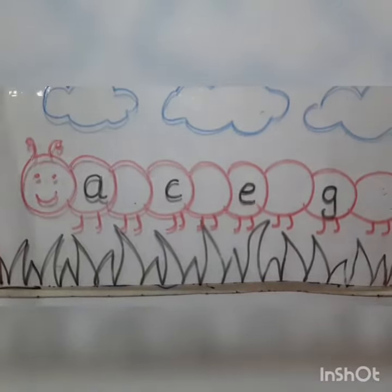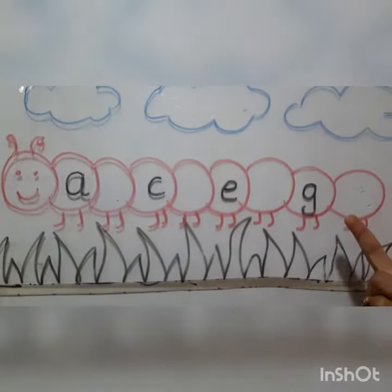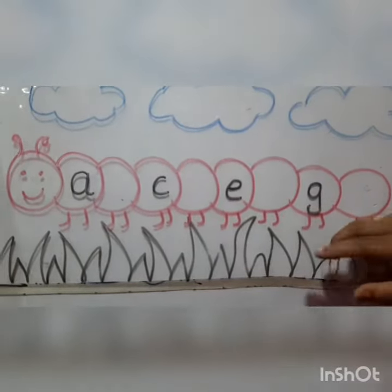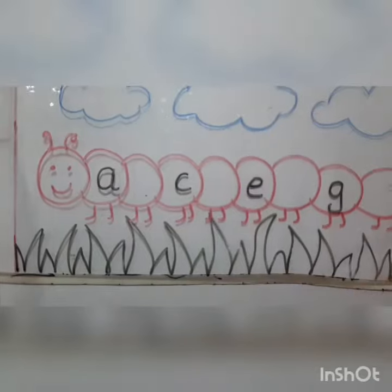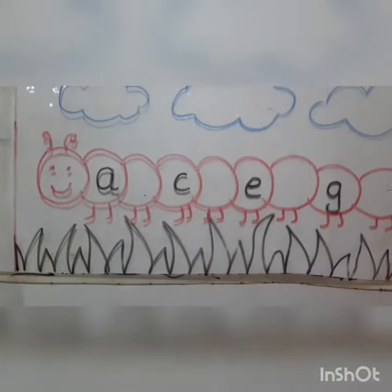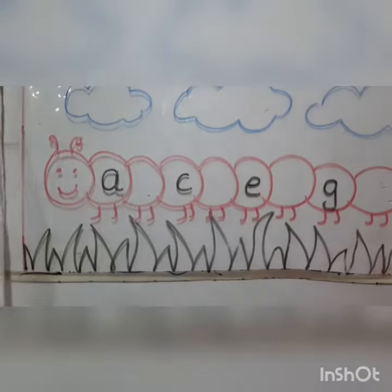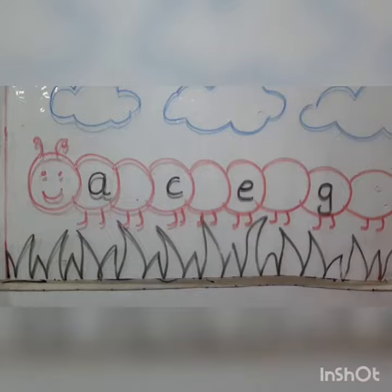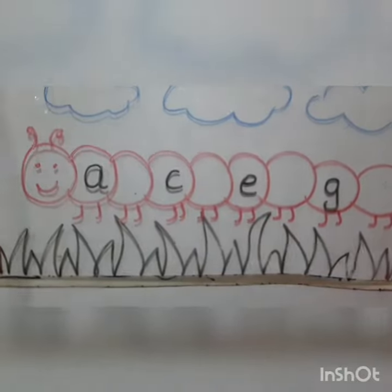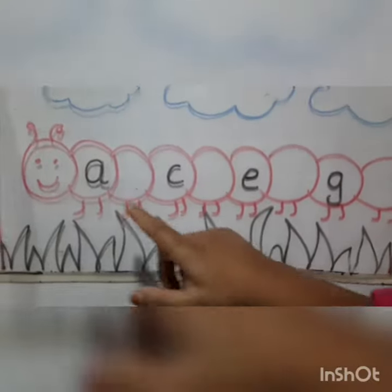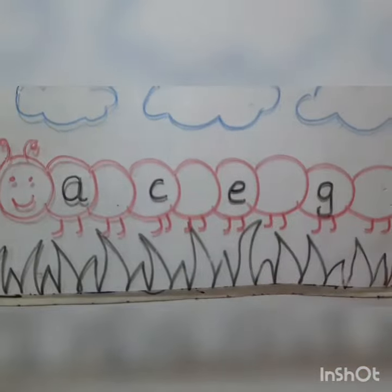And children, one day Corrie the Caterpillar was walking in the garden. This Caterpillar is a very very special Caterpillar. Do you know why? Because it has got letters on its body.